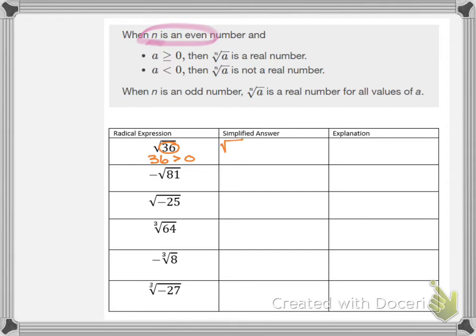Let's take a look at our simplified answer. The square root of 36 is going to be the real number 6, because 6 squared equals 36. Another way to think about it is by rewriting the square root of 36 as the square root of 6 squared. When your index matches the exponent of your radicand it's easy to simplify — it just equals 6.